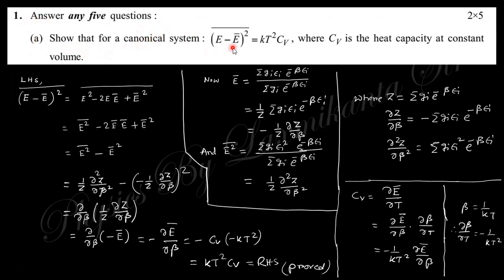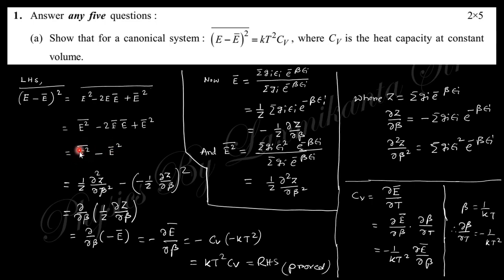Question 1a says: for a canonical system, show that ⟨(E - Ē)²⟩ = kT²Cv, where Cv is the heat capacity at constant volume. E is energy, Ē is the average energy, and their squared difference is the standard deviation squared. Taking the left-hand side, we take the average of the whole square: this gives ⟨E²⟩ minus Ē squared.